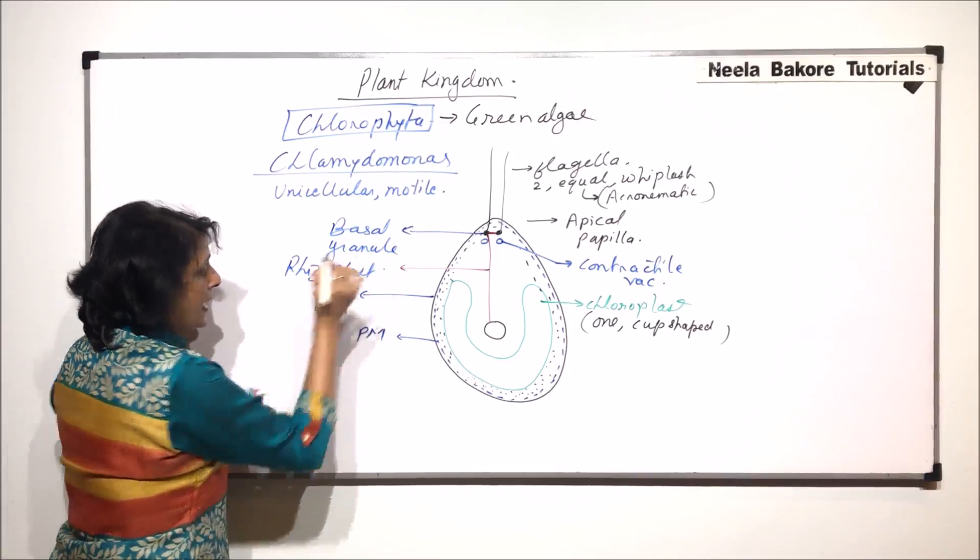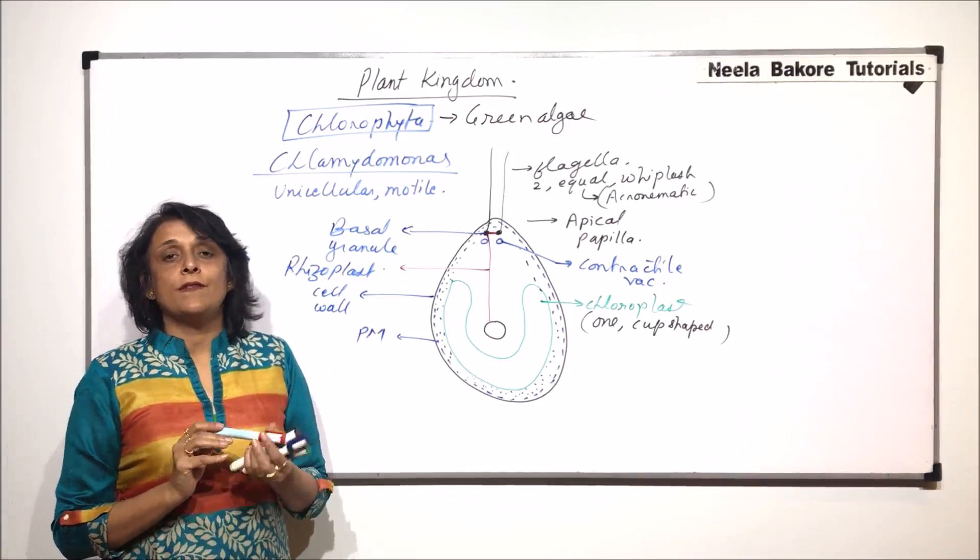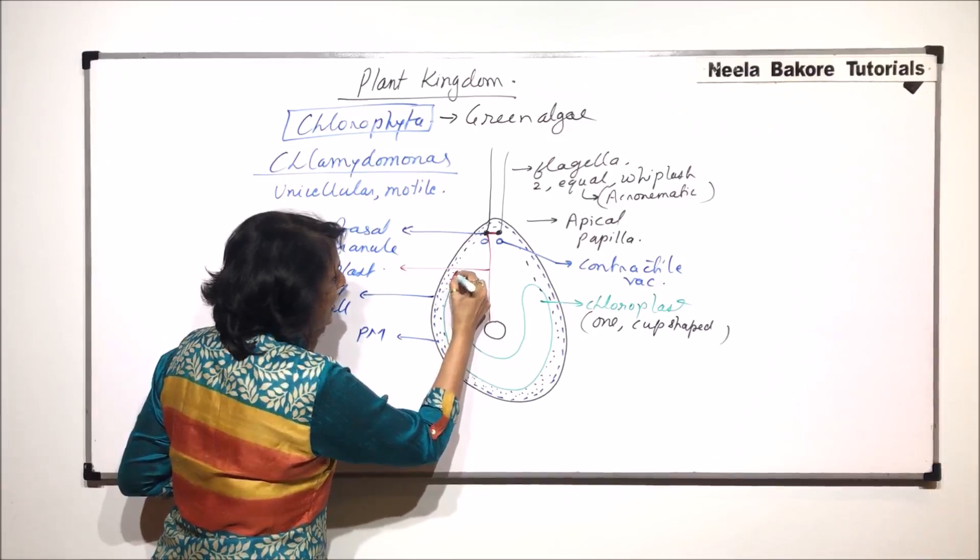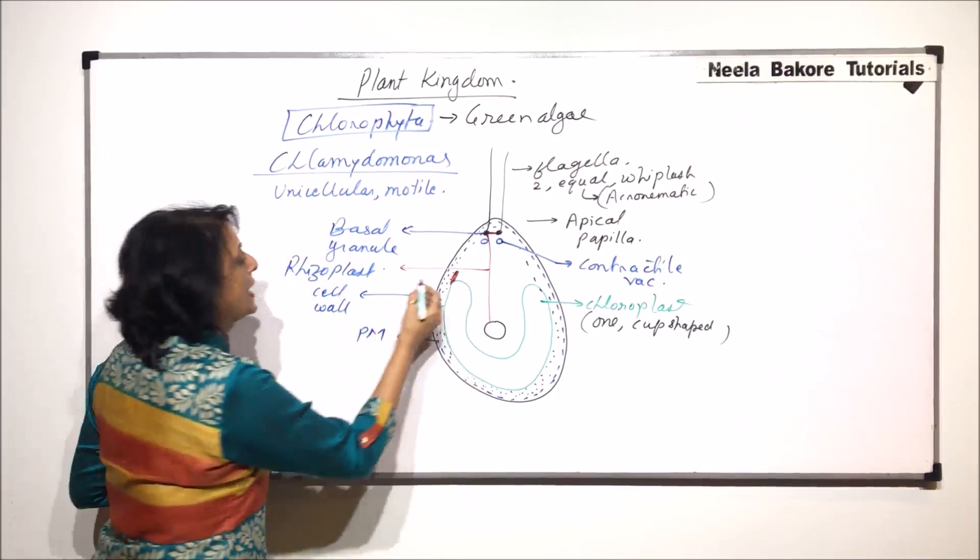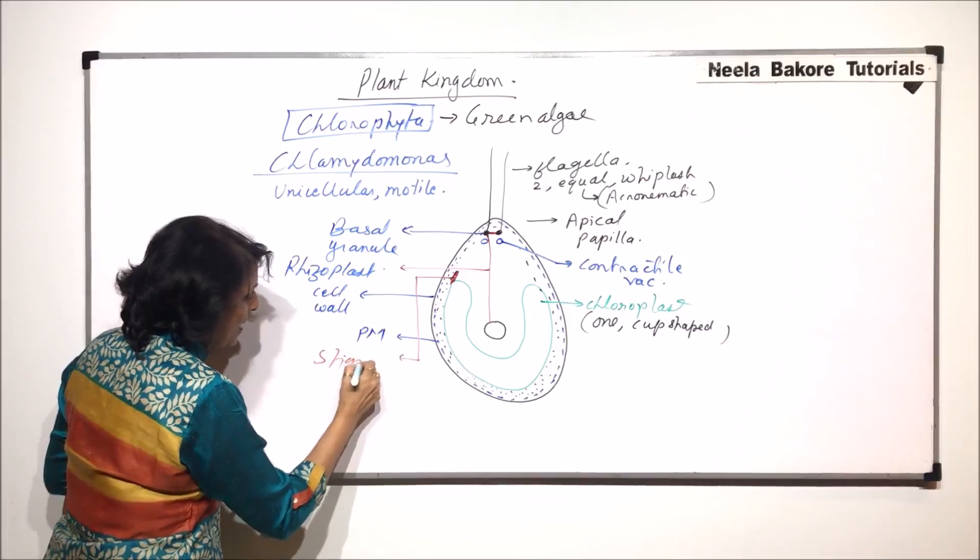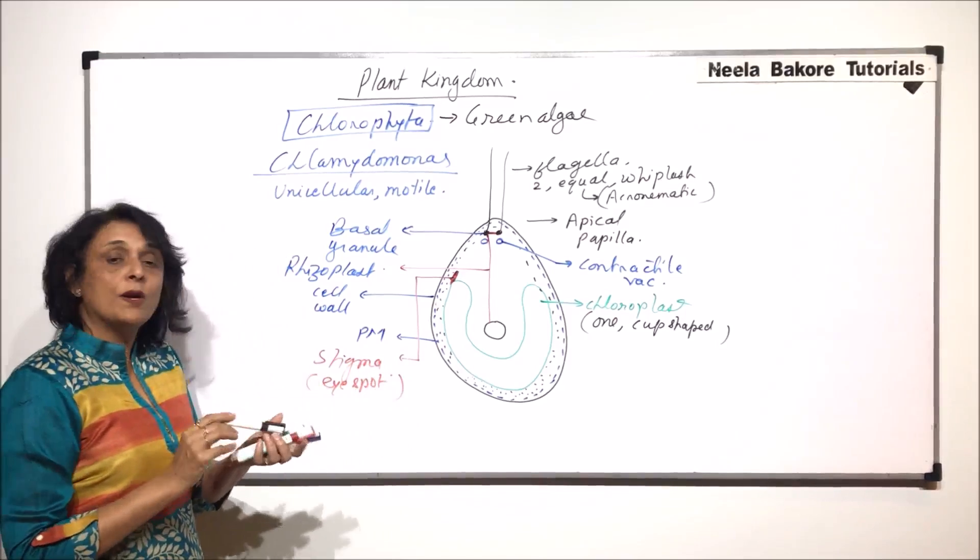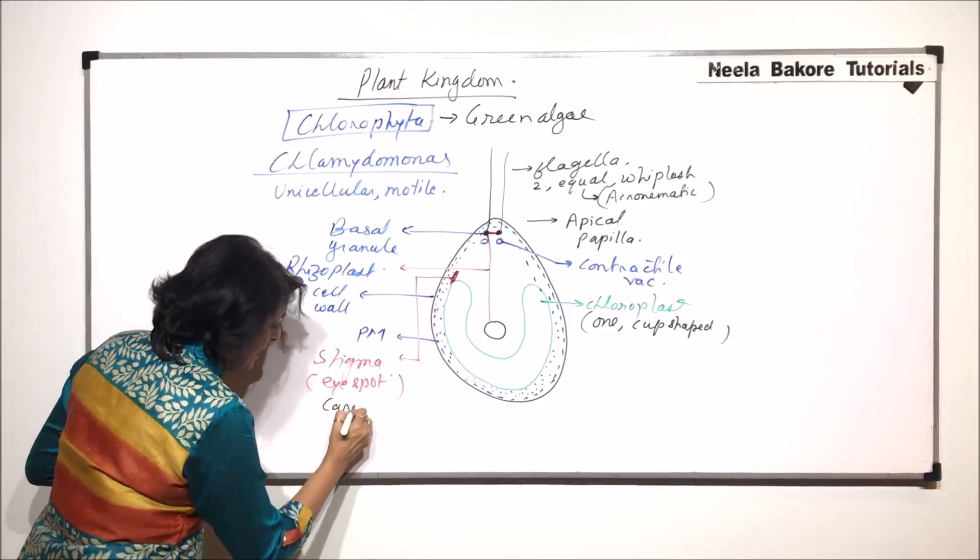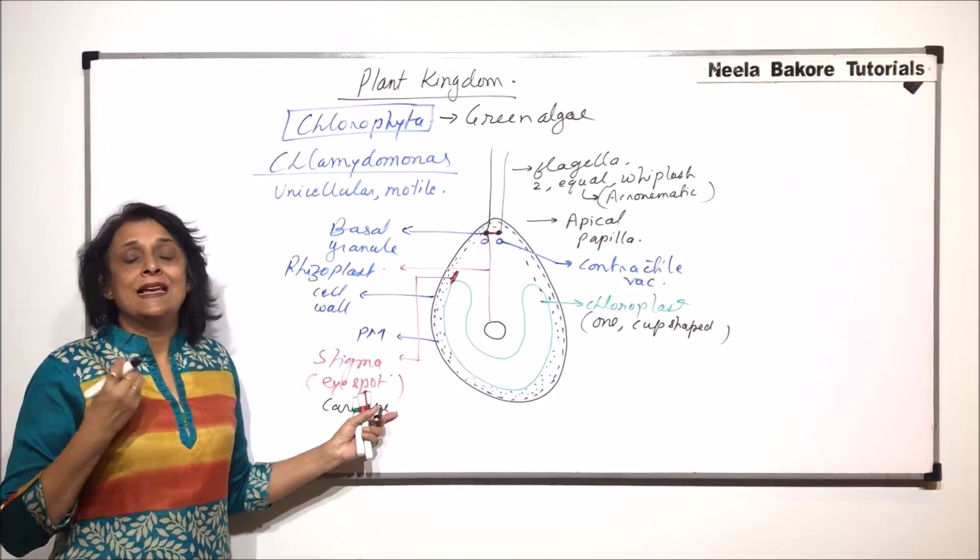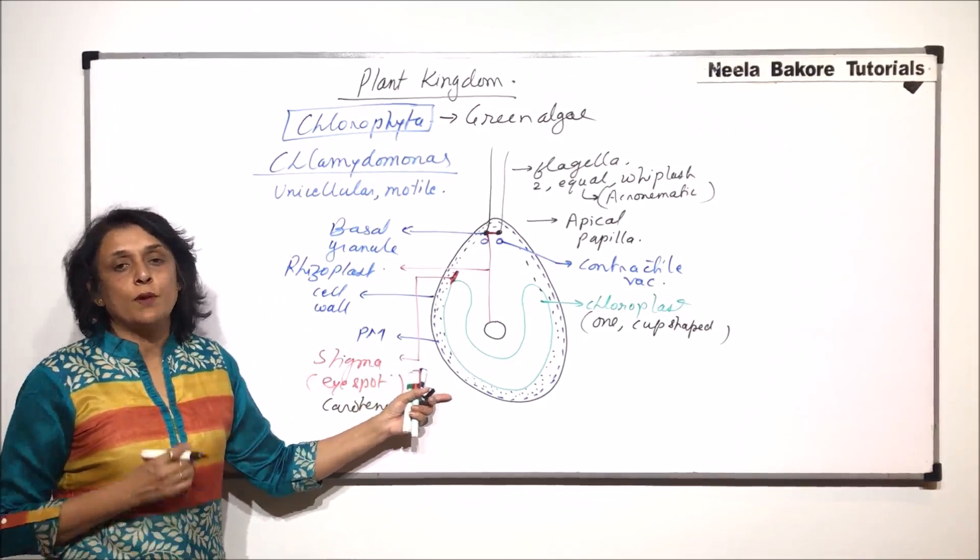These are photosynthetic and so to perceive light there is a pigment here. It is called stigma or eye spot. It is red in color because of carotene, and it helps in perception of light so that the alga can move towards light and can perform photosynthesis.